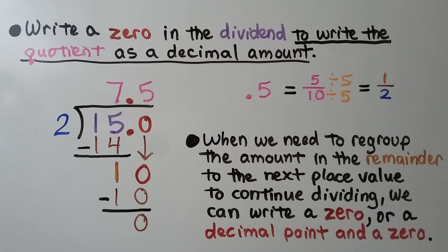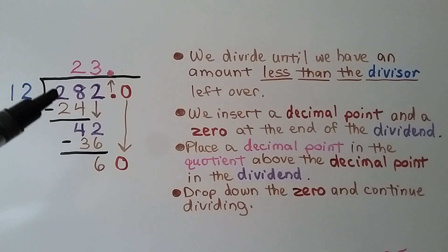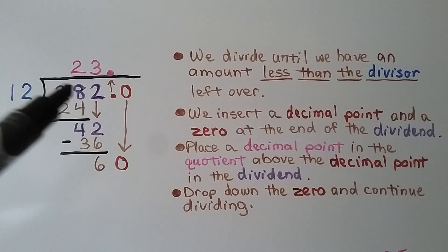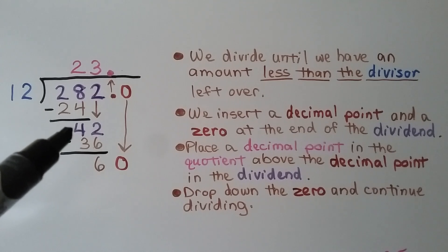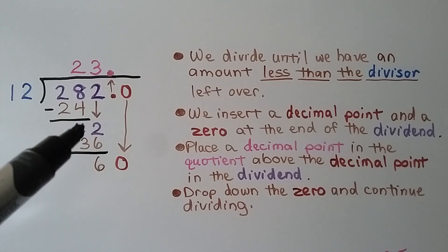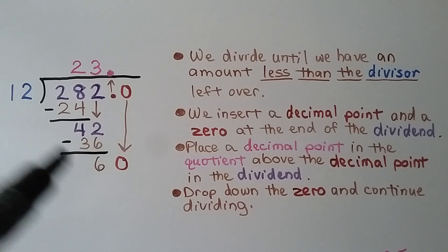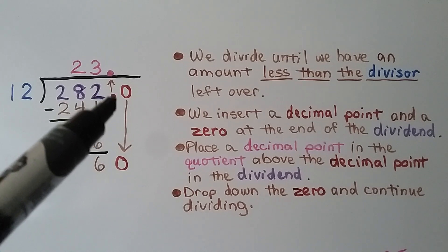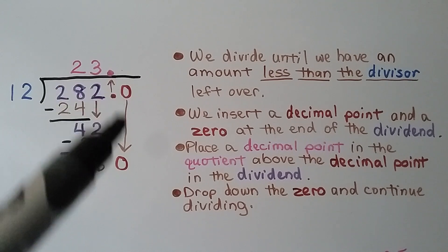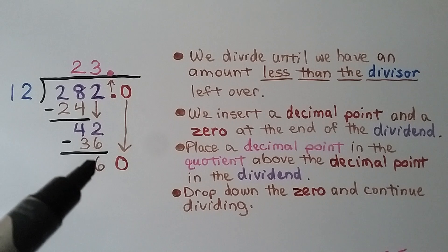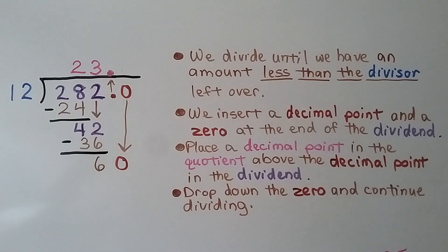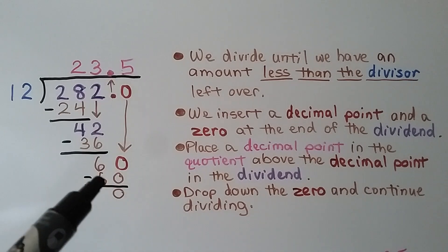When we need to regroup the amount in the remainder to the next place value to continue dividing, we can write a zero or a decimal point and a zero, or several zeros. Here we have 282 divided by 12. 12 can't fit into 2, but it can fit into 28 — 12 times 2 is 24. We subtract and get 4. We drop down the 2; 12 fits into 42 — 12 times 3 is 36. We subtract and get 6. We add a decimal point, place a decimal point in the quotient above it, add a zero, and 12 times 5 is 60. We subtract and get a zero remainder.